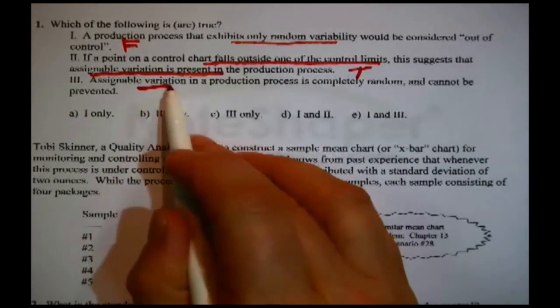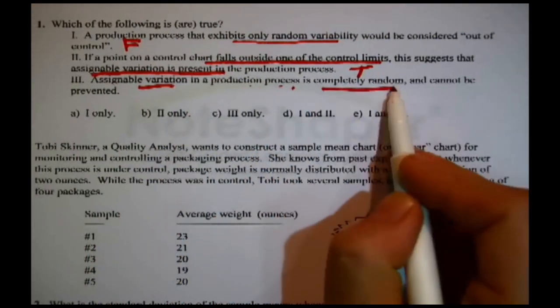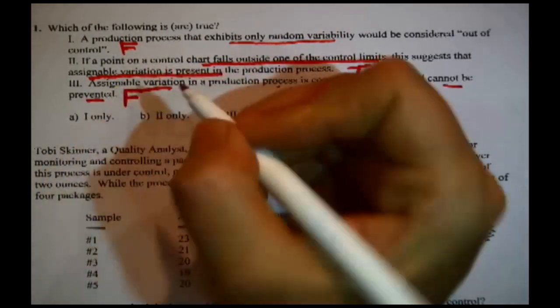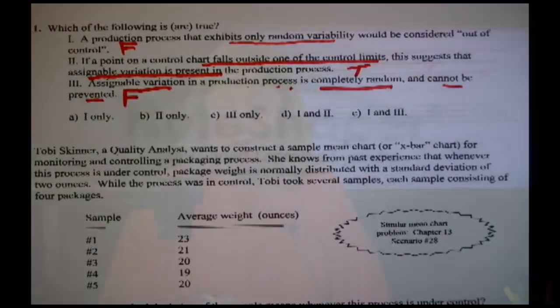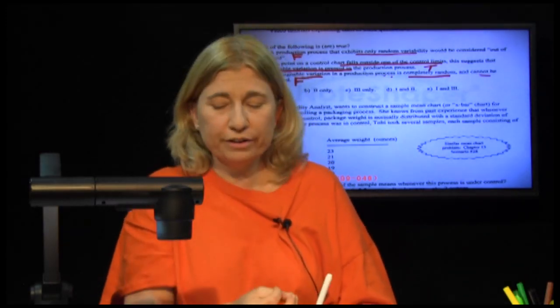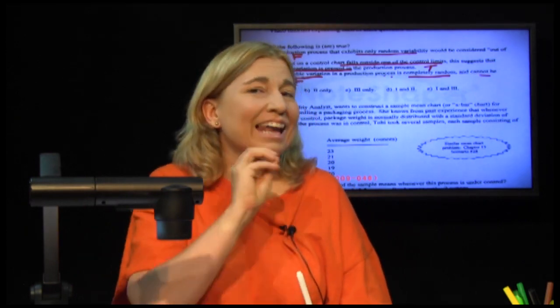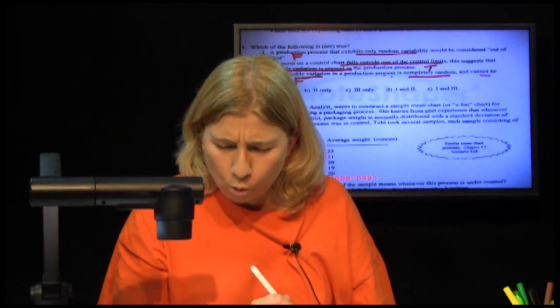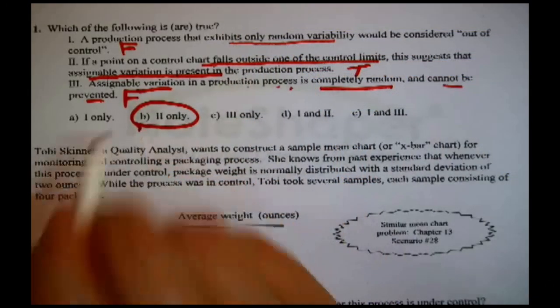Now, three. Assignable variation in a production process is completely random and cannot be prevented. That is false. If you wanted to correct that statement, random variation or natural variation in a production process is completely random and cannot be prevented. The key thing is cannot be prevented. So only the center tested true here, only two.